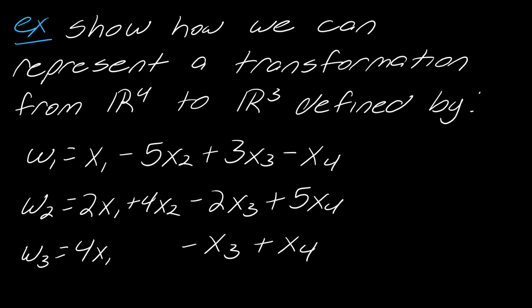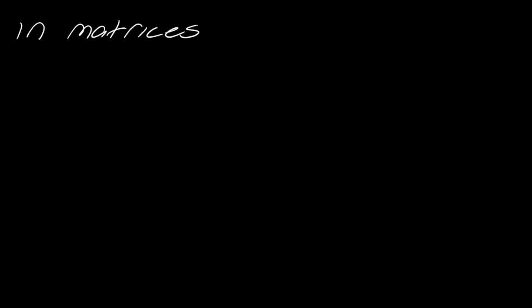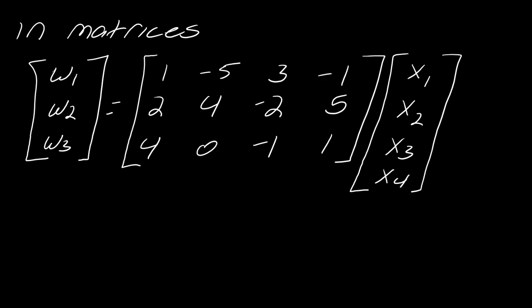So now I just want to show how we can represent a transformation from R4 to R3 defined by this system here. So just to have something specific with numbers here. So first what you might want to do is you might want to just take a second to pause the video here and just write out how would you represent this system with matrices, just as a quick review for yourself. And then you could hit play. So if I wanted to represent this system with matrices, it would look like this. So I've really got everything that I need here for my linear transformation. I just need to pivot the way that I'm thinking about this.